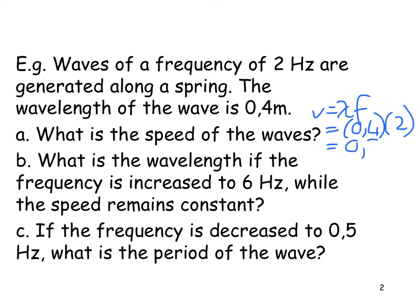What is the wavelength if the frequency is increased to 6 hertz, but the speed stays the same? Well, I've got the speed, I've just worked it out, and I'm now looking for the wavelength. Wavelength is equal to speed divided by frequency, 0.8 divided by 6.